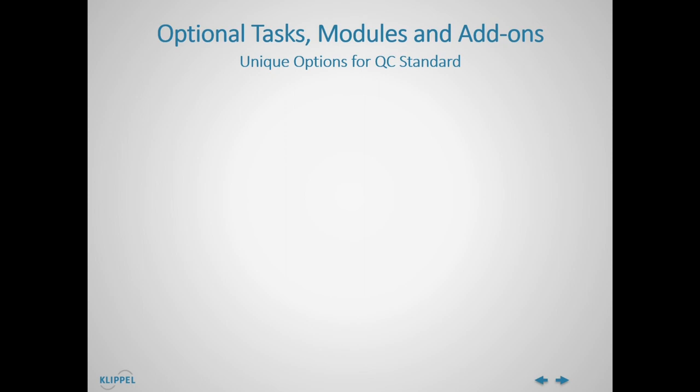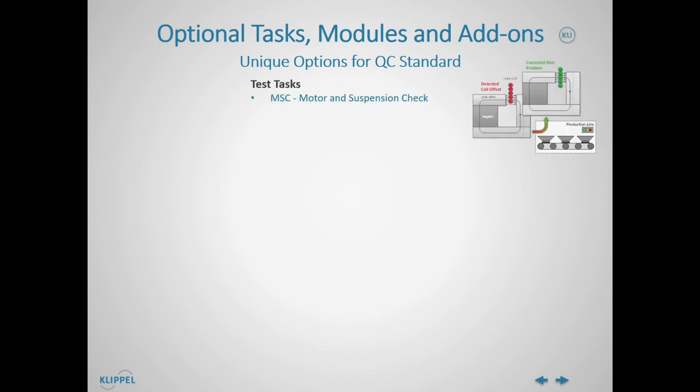The QC Standard software can be flexibly extended by various unique test tasks, add-on features, or post-processing tools to take your QC testing to the next level. First, we have the test tasks — additional test steps that can be added to your test sequence. We have the Motor and Suspension Check, the sibling of the famous Klipple LSI of the R&D system, for nonlinear parameter testing such as voice coil offset.